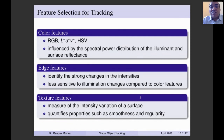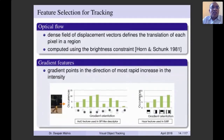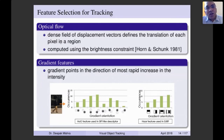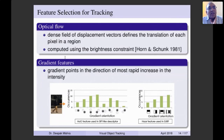Optical flow computes motion vectors in two-dimensional space — local or global motion — finding how much an object would be moving. It can be computed using the brightness constraint; popular methods include Horn-Schunck and others. Gradient features point in the direction of most rapid intensity increase; we can use a Haar-kind of filter to compute the gradient feature and use it while tracking the object.